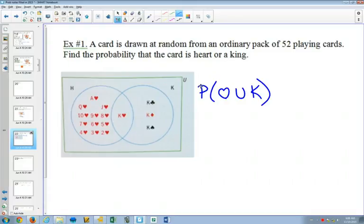So if we think about the formula, the formula says we should figure out the probability of getting a heart, plus figure out the probability of getting a king, and then subtract when those both happen.